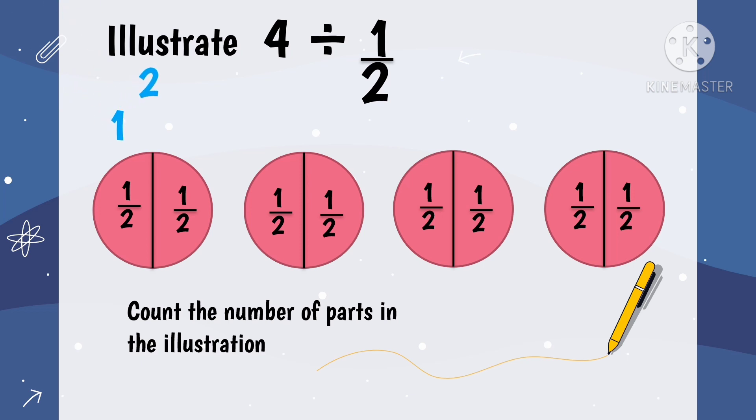1, 2, 3, 4, 5, 6, 7, 8. So, we have 8 one-halves in the 4 circles.